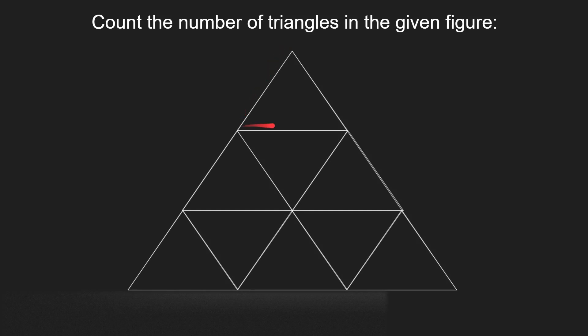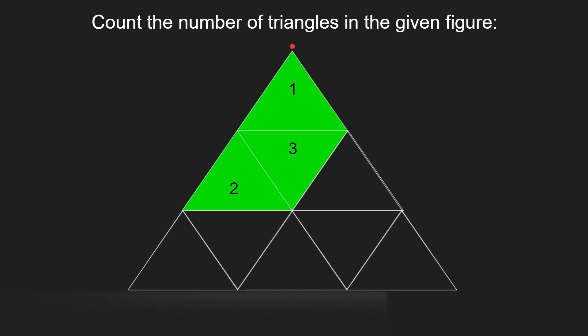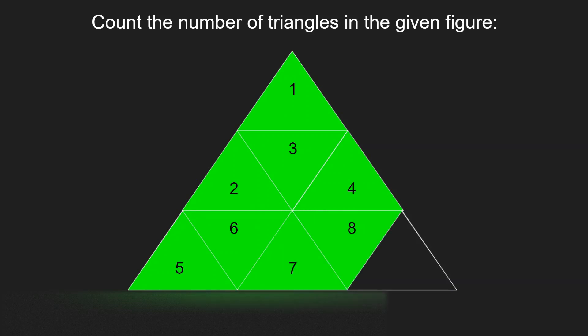Here the tiniest units are these triangles. Start by counting them. 1, 2, 3, 4, 5, 6, 7, 8 and 9.